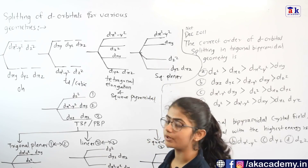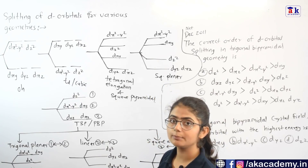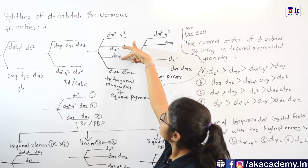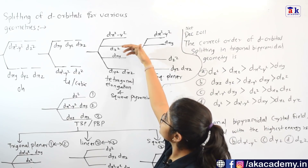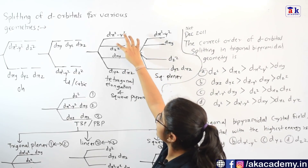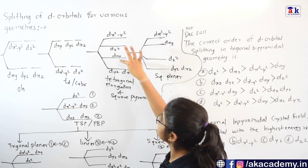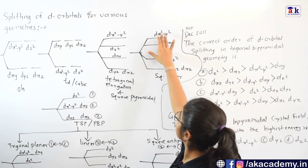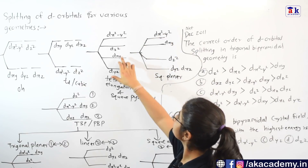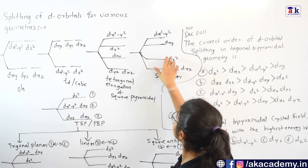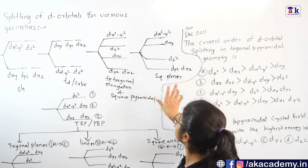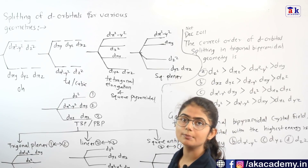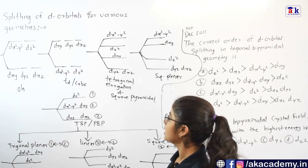For square planar geometry, what you have to do is just flip from the tetragonal elongation diagram — send DXY up and DZ square down; the others remain the same. So this diagram will be for square planar complexes.